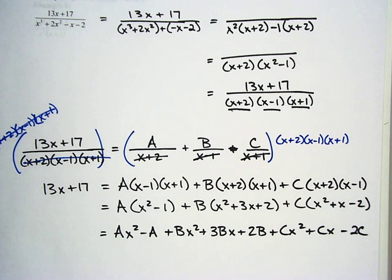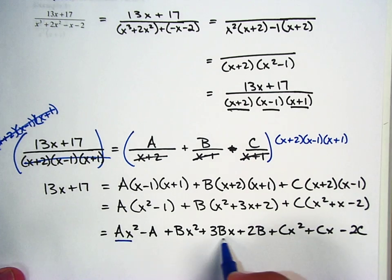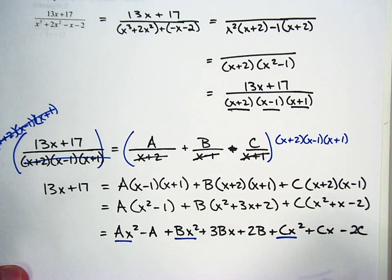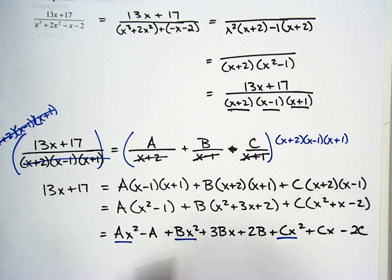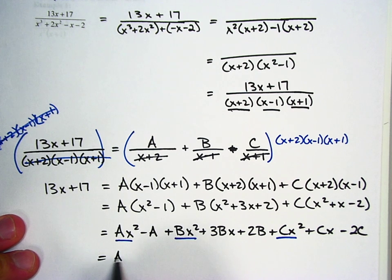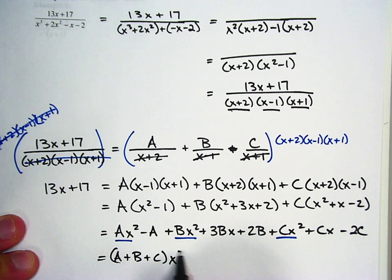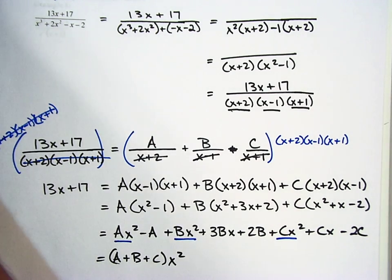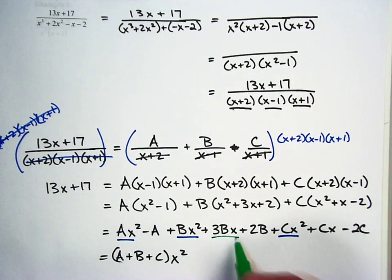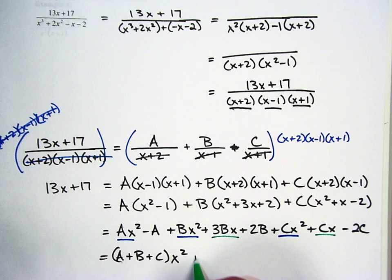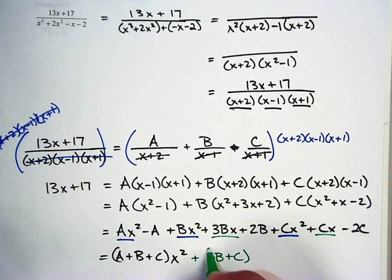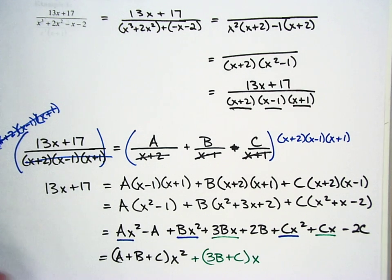Taking a look at your terms, we have A x squared, B x squared, and C x squared. So those are all going to be grouped together. So I have A plus B plus C times x squared. I also have 3Bx and Cx. So that's going to be 3B plus C. And the x is going to be thrown out on the side there.